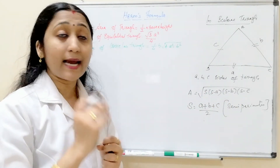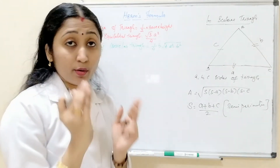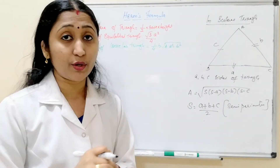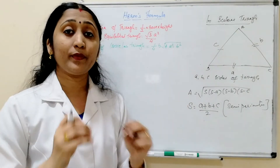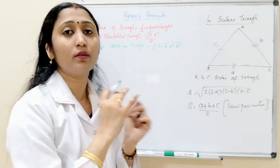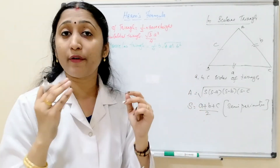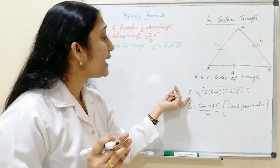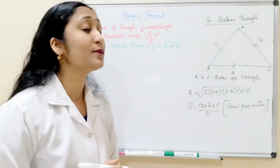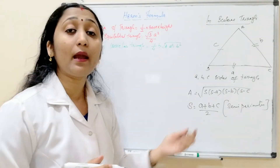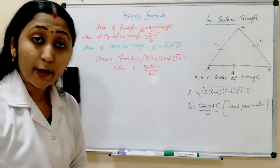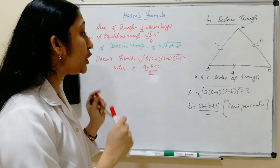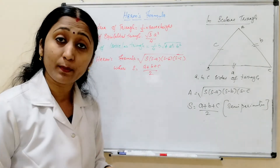Here a, b, c are the sides of the triangle. The derivation of Heron's formula will be given in the next video, as it is lengthy. You only need to memorize this formula — that is enough to solve problems. So what is Heron's formula? Area equals the square root of s times (s minus a) times (s minus b) times (s minus c), and s equals (a plus b plus c) by 2.